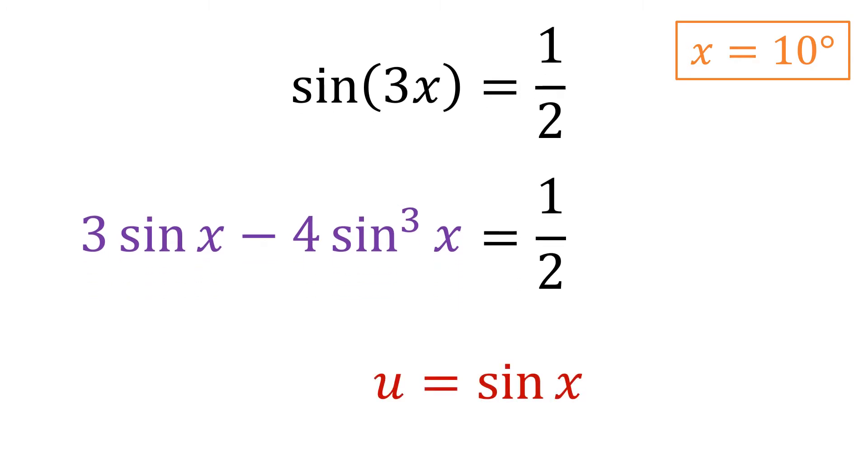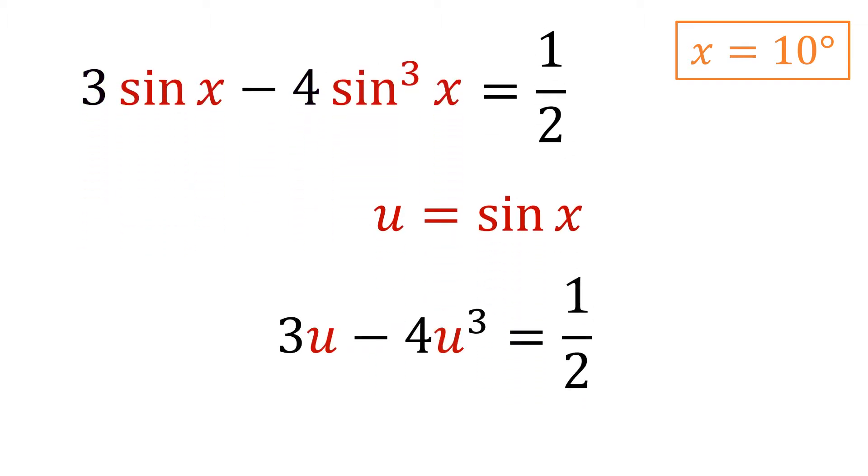And I think at this point, we'll say goodbye to the sine terms altogether by making one final substitution, u equals the sine of x. So instead of having a trigonometric equation, let's work exclusively with a polynomial equation. And remember, if u equals the sine of x and x equals 10 degrees, then when we solve for u, we'll really be solving for the sine of 10 degrees.